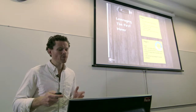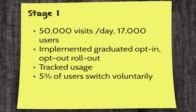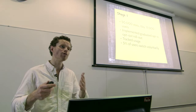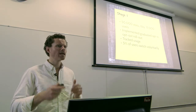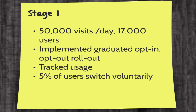In the projects I worked on for Bloomberg, these two in particular stand out — they're about leveraging the first mover. The first project was about replacing a function where we had about 17,000 users visiting our page about 50,000 times a day. We implemented a graduated opt-in, opt-out rollout. When you have your new piece of software or webpage, you give users the option to opt-in via a drop-down or checkbox. Once that's been running for a few weeks, you opt everyone in and allow people to opt-out if they don't like it. Then after a few more weeks, you opt everyone in — hopefully after fixing the problems causing some people to opt-out. We tracked the usage and found that 5% of our users voluntarily switched across. We called those the first movers.